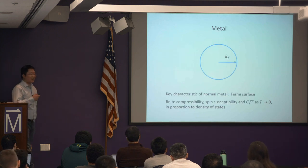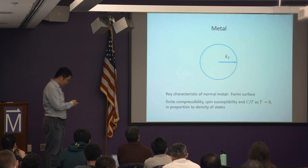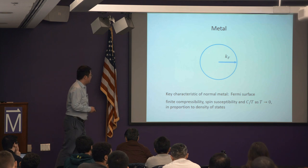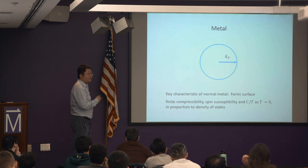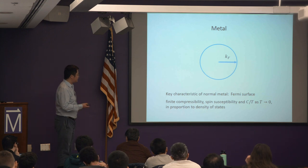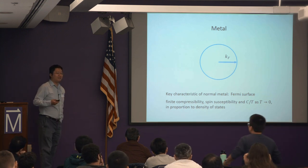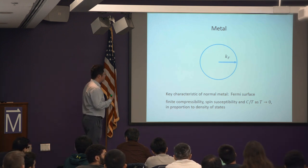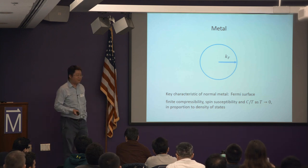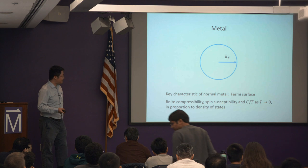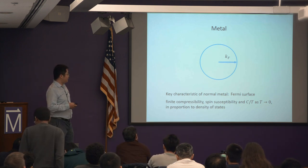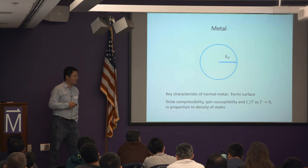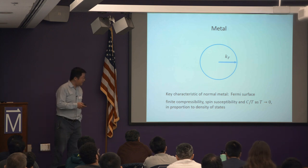Let me start with a very general introduction to metallic states of matter. Take an example of an ordinary metal. A key characteristic is that it has a Fermi surface with a Fermi momentum, and the very existence of the Fermi surface leads to a variety of consequences. This metallic state has a finite compressibility, a finite spin susceptibility divided by temperature down to the zero temperature limit. In a non-interacting system, all these susceptibilities are proportional to the non-interacting density of states.